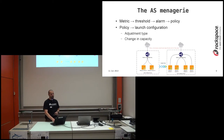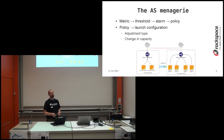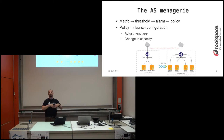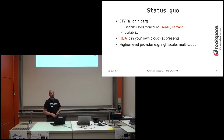The policy also specifies the adjustment type: you can say you want to double the size of your fleet, or add 10 instances, or add 25 percent of your fleet. And the change in capacity can be positive if you want to increase capacity, or negative if you want to turn off resources. For example, with a load balancer and an auto scaling group, when load increases you can just double the size of the auto scaling group.